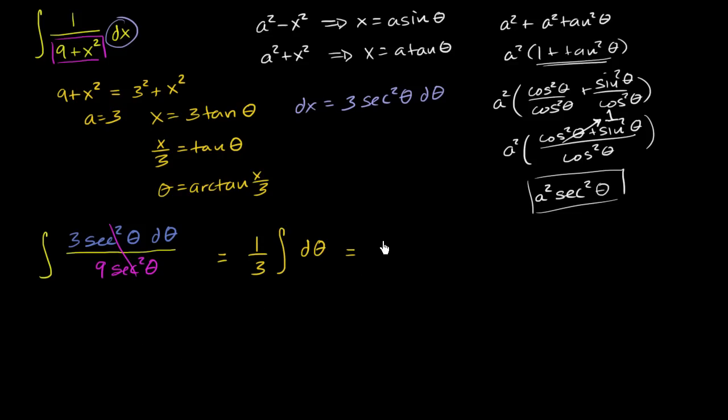Which is equal to 1 third theta plus c. And now we just have to put things in terms of x. And we see theta is equal to arctangent of x over 3. So this is going to be equal to 1 third arctangent of x over 3 plus c. And we are done.